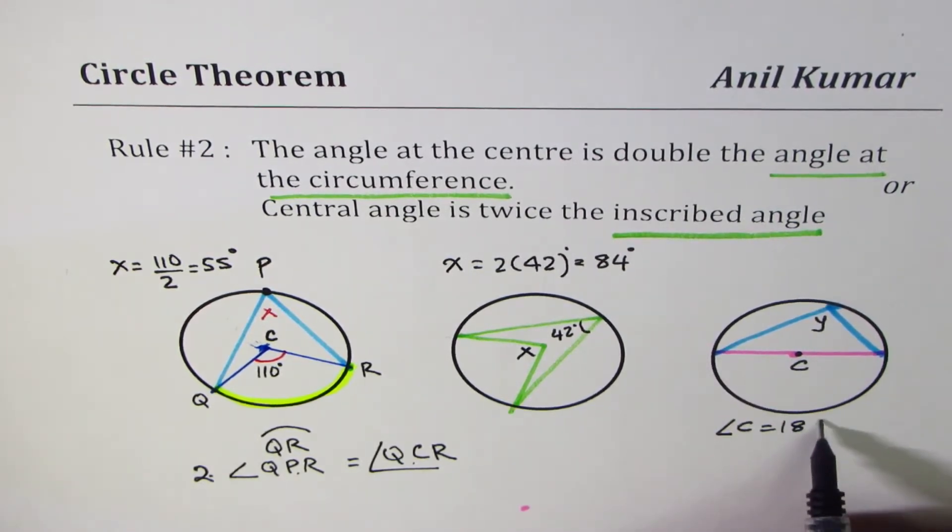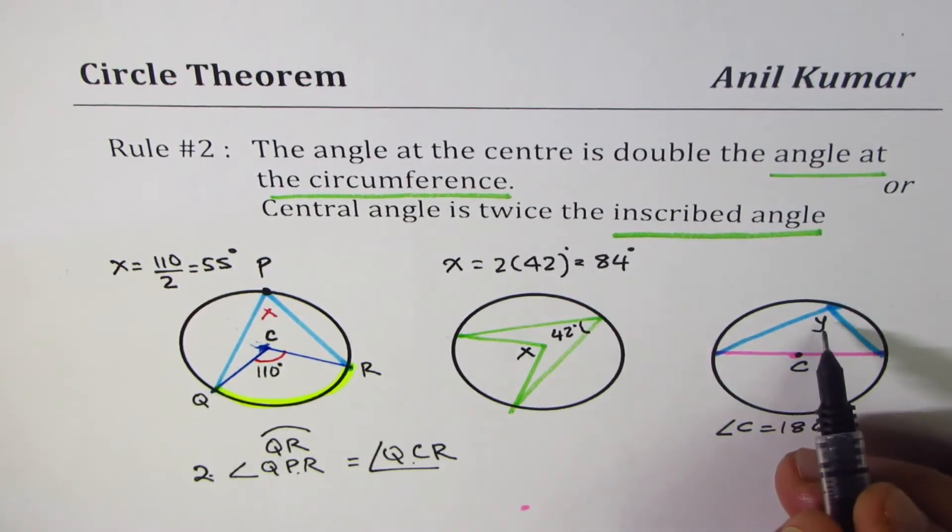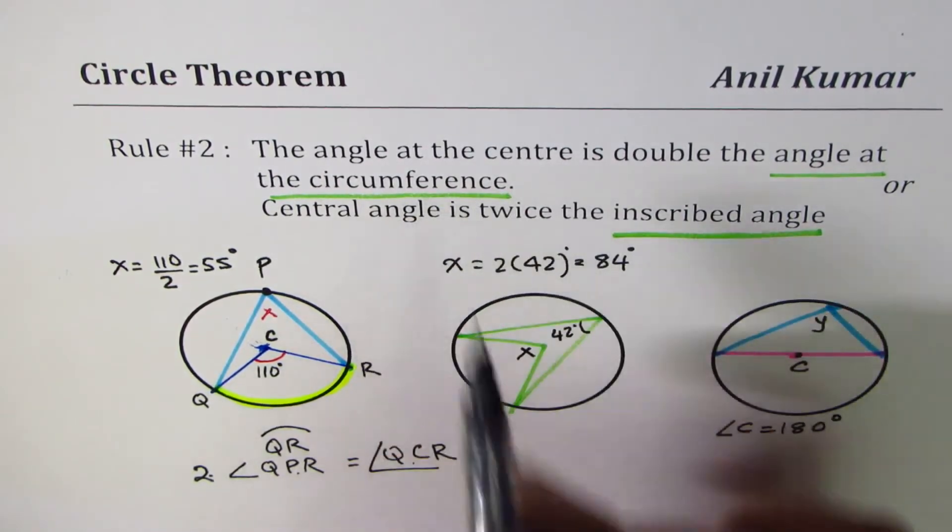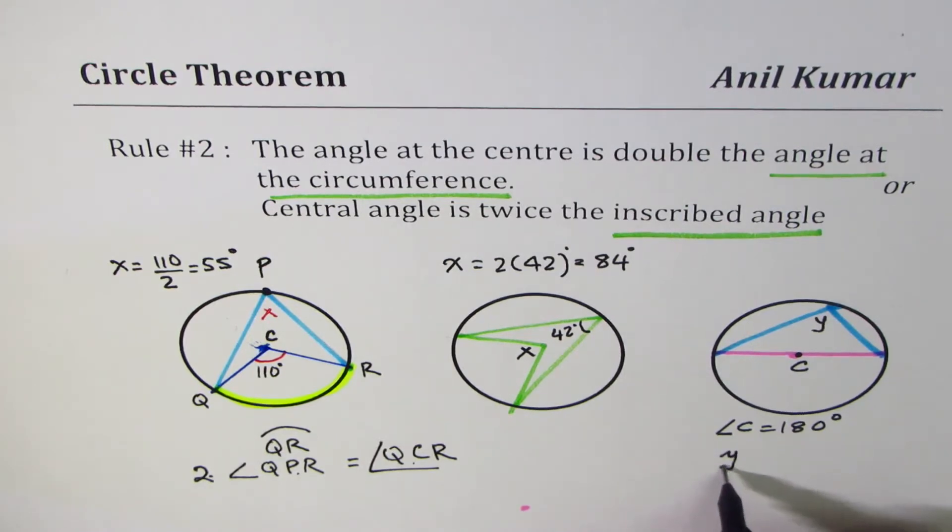Which is 180 degrees. Y is the angle at the circumference. So Y should be equal to half of 180 degrees, right? That is 90 degrees. So from here,